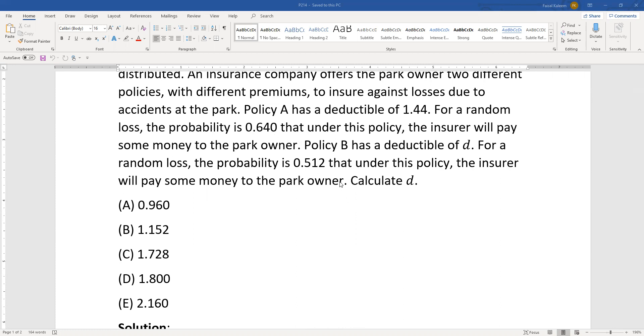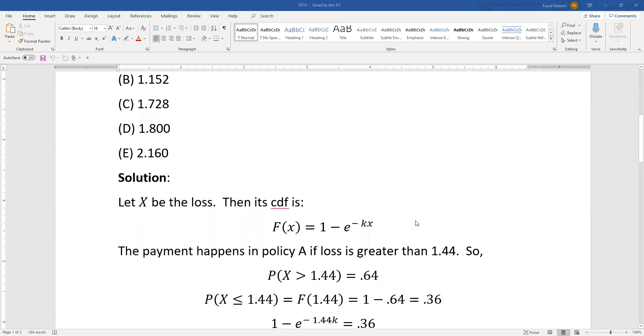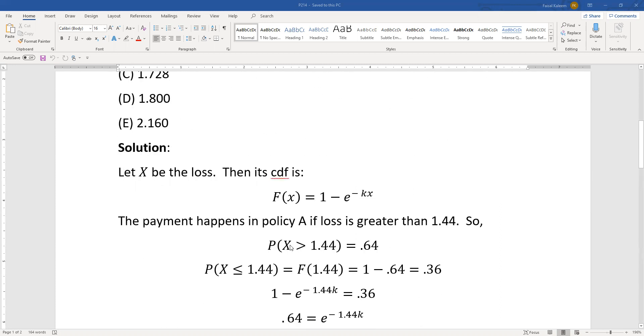than the deductible. So basically, this 0.64 is the probability that the loss will be greater than 1.44. So P(X > 1.44) = 0.64, and P(X ≤ 1.44), which is what the CDF at 1.44 will be, equals 1 minus P(X > 1.44), which is